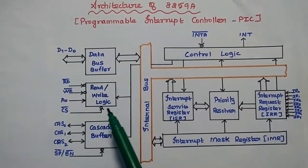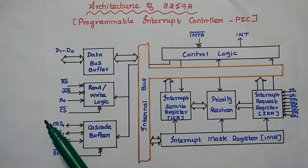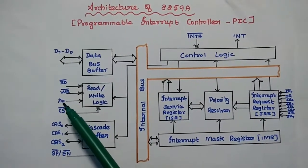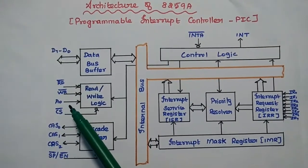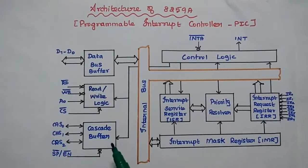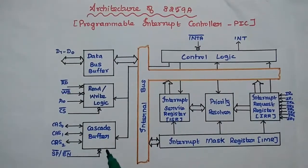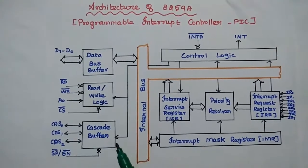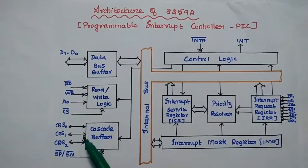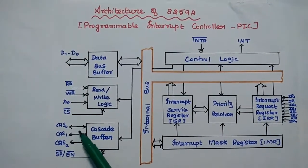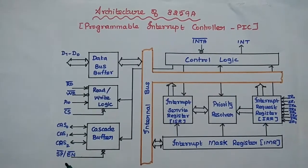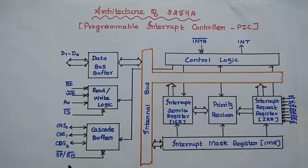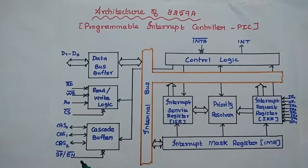The data bus buffer is an 8-bit bidirectional buffer used to transfer data, control word, and status information between the processor and this interrupt controller. The read/write logic unit has four input signals from the processor: read bar, write bar, A0, and CS bar, where A0 is the address line. The cascade buffer is enabled whenever we cascade an additional 8259 with this IC. It has three enabling signals: CAS0, CAS1, CAS2, and also SP bar/EN bar, which is important to decide slave program or enable the buffer.